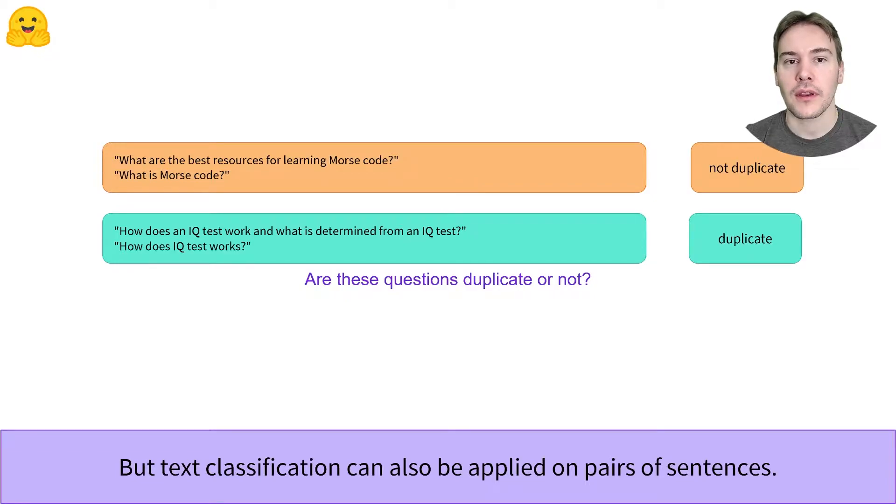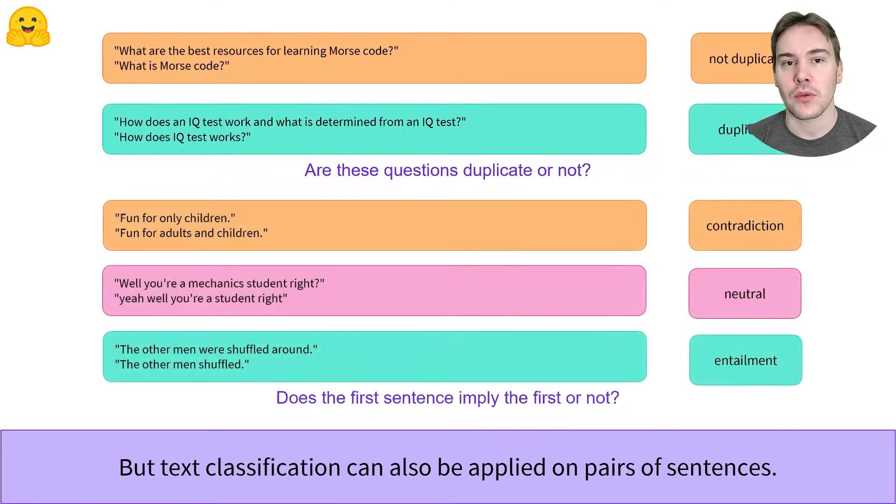In the first pair, the two questions are duplicates. In the second pair, not. Another classification problem is when we want to know if two sentences are logically related or not, a problem called natural language inference or NLI.